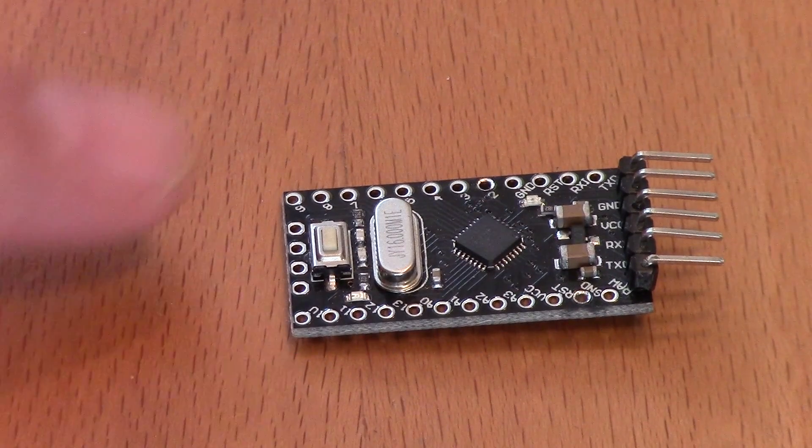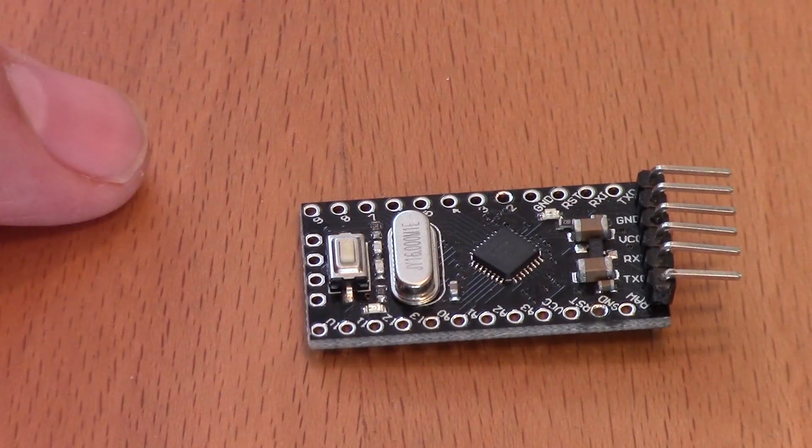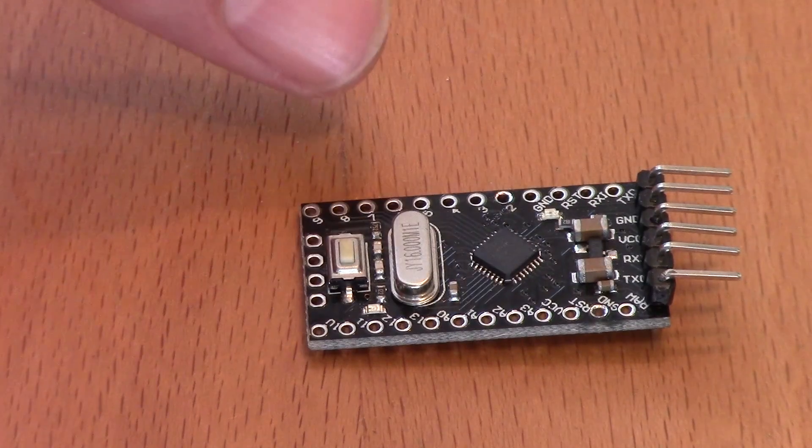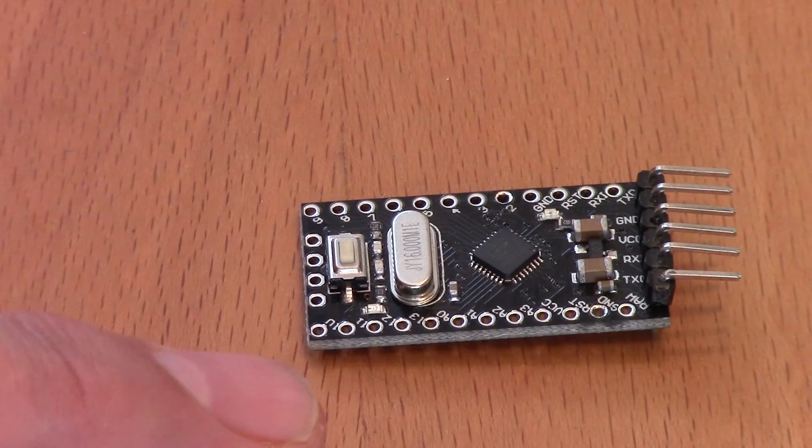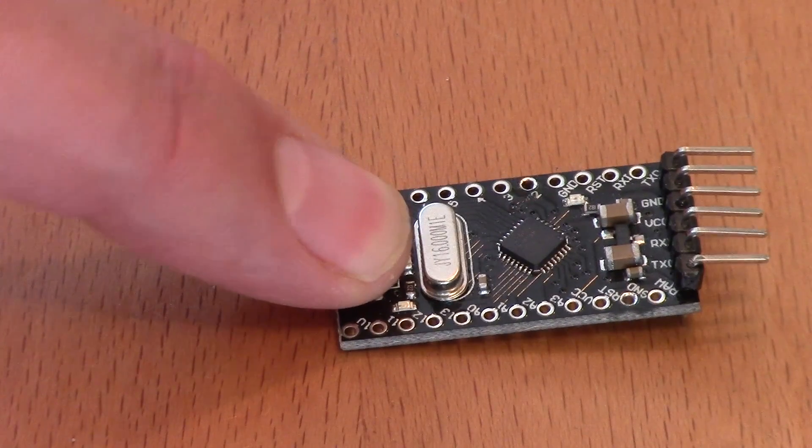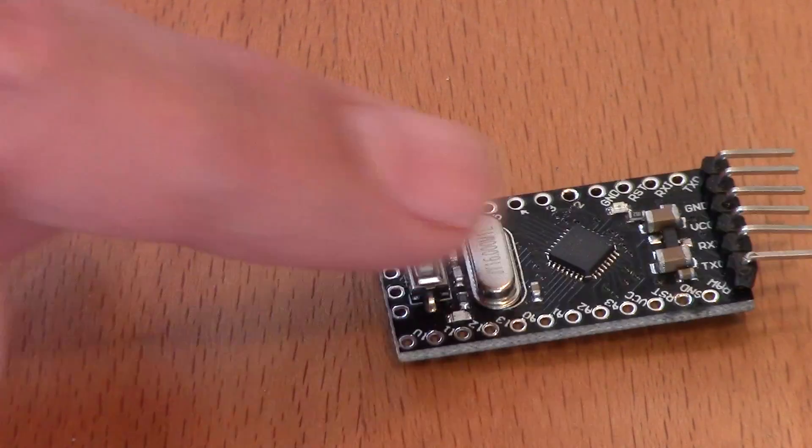So, this is one of these Pro Mini things, and it's absolutely tiny. Little Atmel processor in the middle, a bunch of input-output pins on it, and a reset button. And it's got an LED on there somewhere. And that's it.